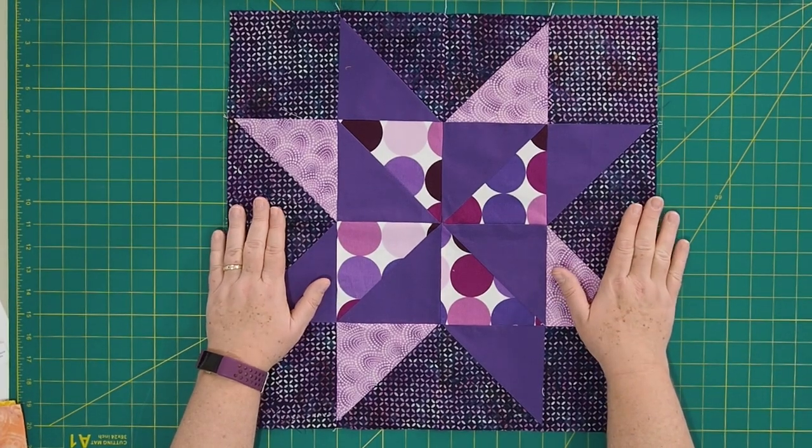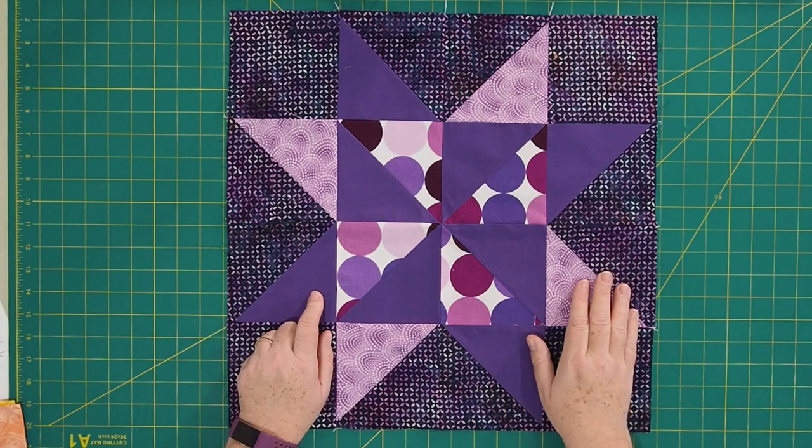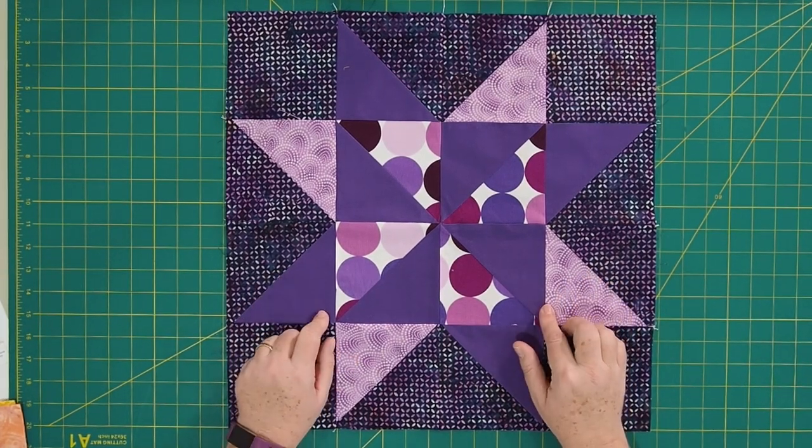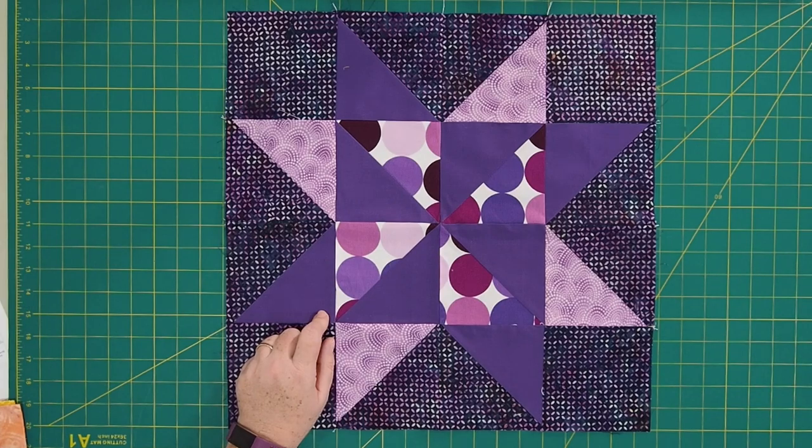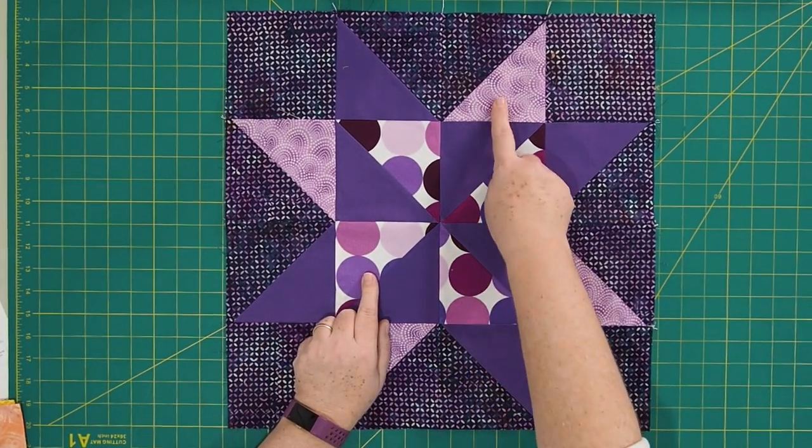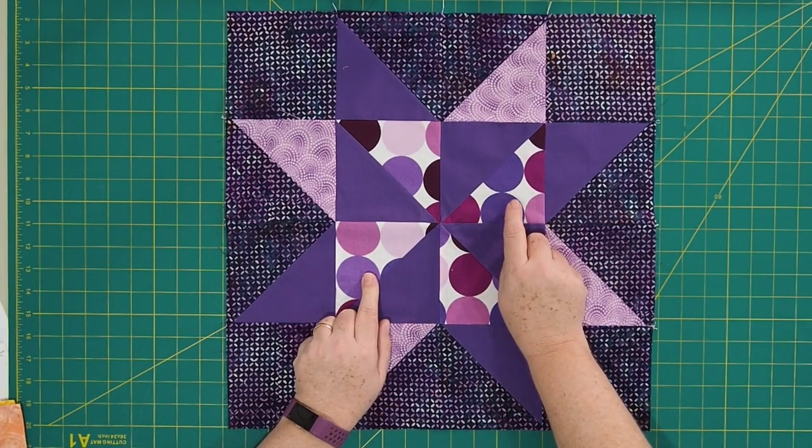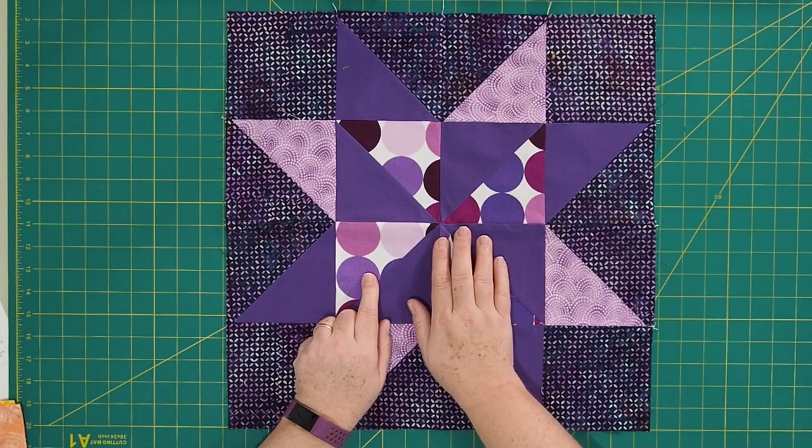So this is the block we're going to be making today. It's an 18 and a half inch Pinwheel Sawtooth Star and I think it's a lot of fun. It's a lot of movement in it. The one thing I want to point out is when I was making, this is my tester block, I ran out of this fabric here, so I improvised and put this here.